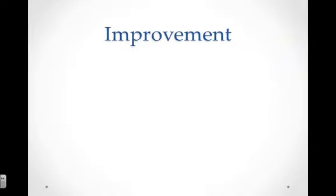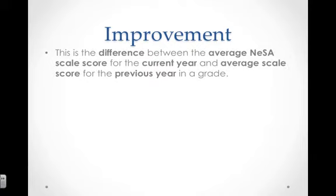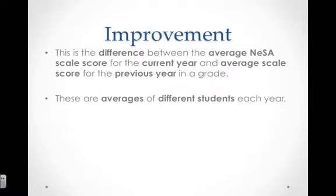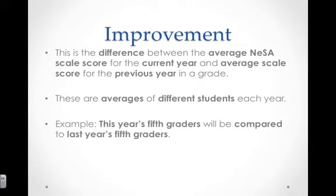Improvement is another component of NEPAS. Improvement is the difference between the average NESA scale score for the current year and the average scale score for the previous year in a grade. These are averages of different students each year. An example would be: this year's fifth graders will be compared to last year's fifth graders. This is also a ranked category.